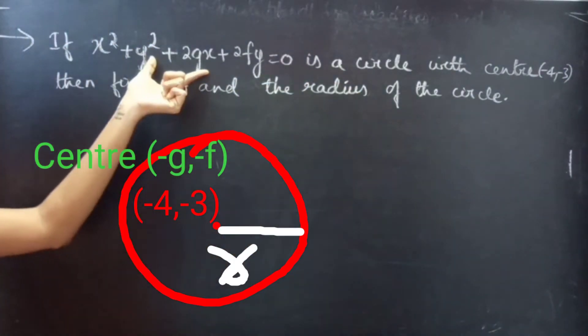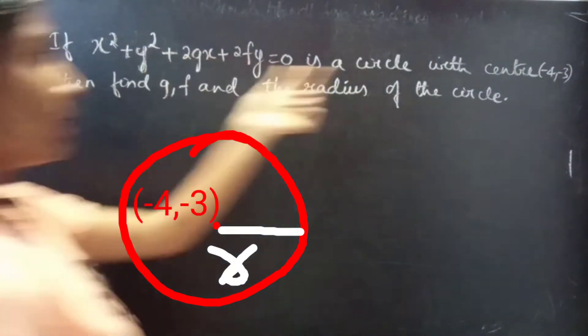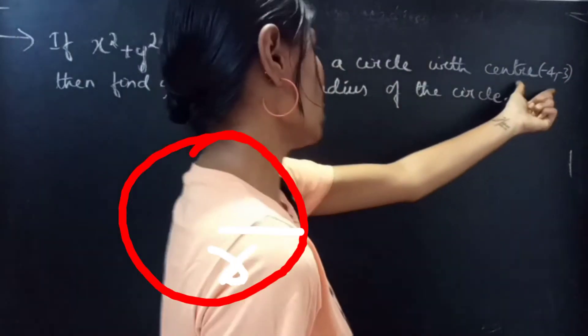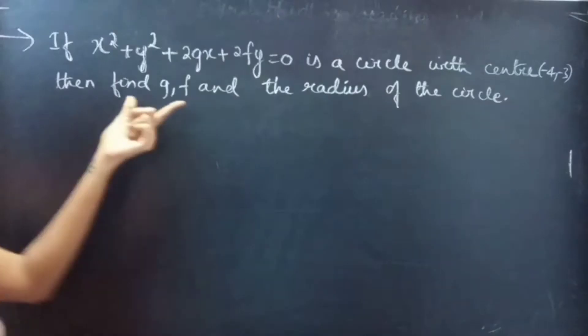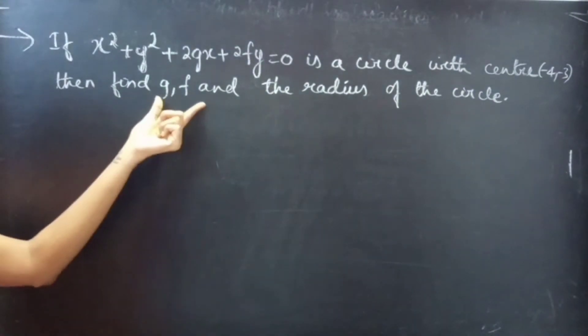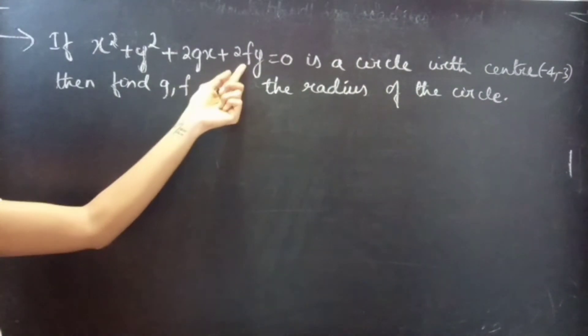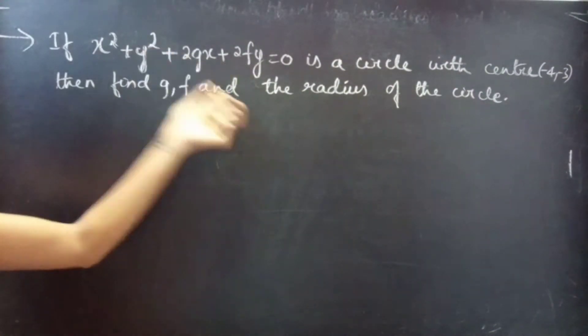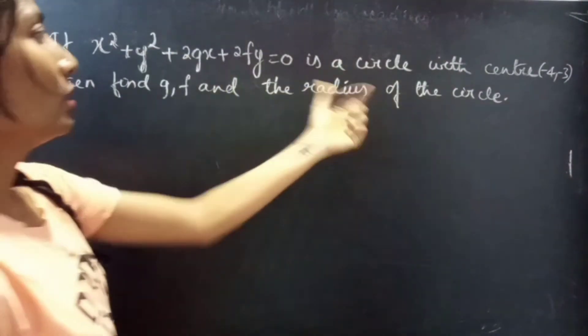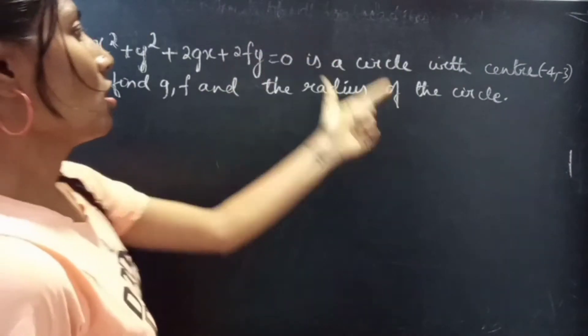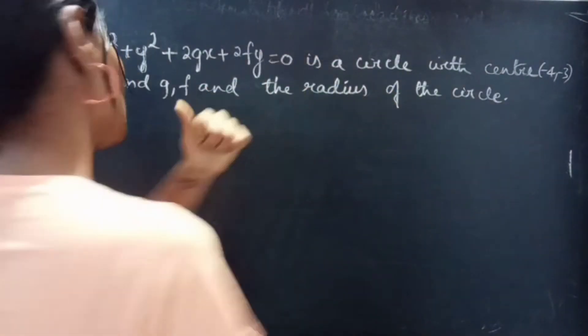So we are given a circle and its center, and we are asked to find the values of g and f and its radius.